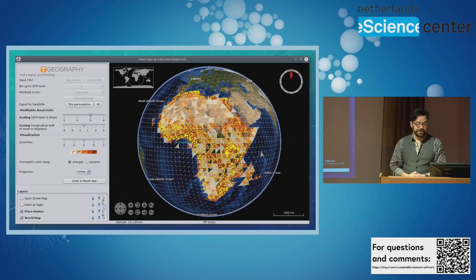Also built a while ago, an application for teaching that demonstrates the modifiable aerial unit problem. So that's the issue that when you change size or change shape of any aggregational unit, the statistics change radically. And this uses a DGGIS with a bunch of points in Africa, and you can shift the DGGIS or you can go to different levels, which are bigger, smaller, and you see that the choropleth pattern drawn across Africa starts changing a lot.